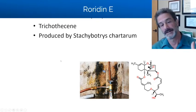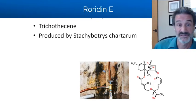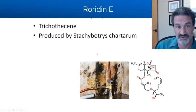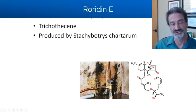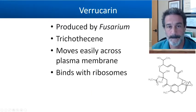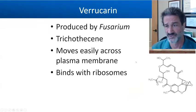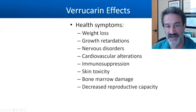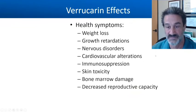Enniatin E is one of the bad trichothecenes produced by stachybotrys — that's the one you really don't want to find in your house, and it does take quite a bit of moisture to grow. Some folks recommend using mold plates to check your house, but I'm not a big fan of that because culture medium doesn't grow stachybotrys, and it tends to be heavier and closer to the ground. Good mold inspection will cover this. Verrucarin is another trichothecene that easily moves across the plasma membrane and binds to ribosomes. Effects include weight loss, growth retardation, nervous system disorders, skin issues, and it decreases reproductive capacity.